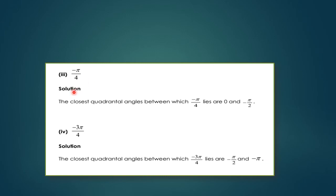Third part: −3π/4. The closest quadrantal angles between which −3π/4 lies are −π/2 and −π, meaning it lies between −90° and −180°.